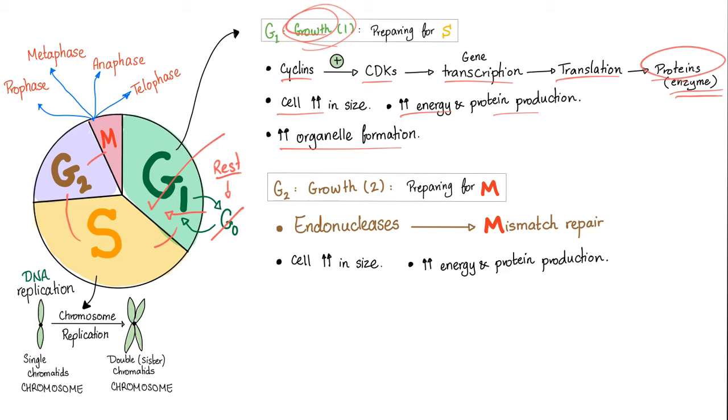We are done with G0 and G1. Let's talk about S. S is for synthesis. What do you mean by synthesis? I mean DNA replication. What do you mean by DNA replication? Instead of having this single chromatid called chromosome, now we have double or sister chromatids also called chromosome. This is called chromosome. This is called chromosome. I mean, what else are you going to call it? It's still a chromosome. We are done with S.